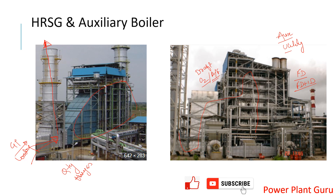In the HRSG, however, the flow is entirely in one direction — you don't have that much force of air, so you have to let it go in one straight direction. This also gives a little control over the size of the boiler, so you can save on structural steel and accommodate different parts of the boiler more efficiently.